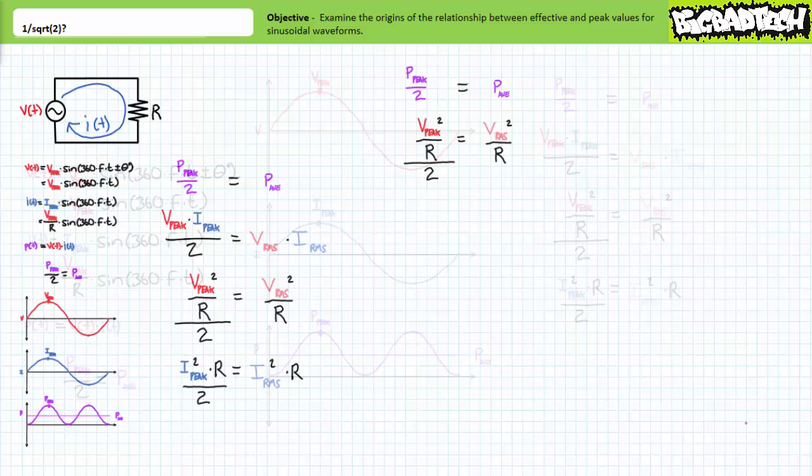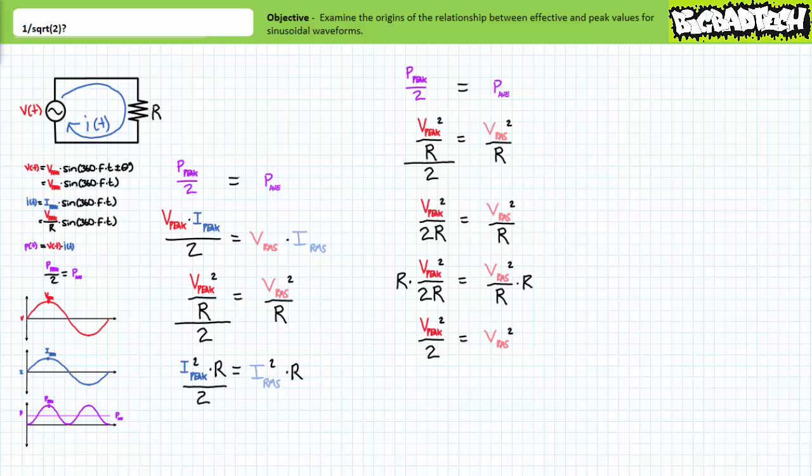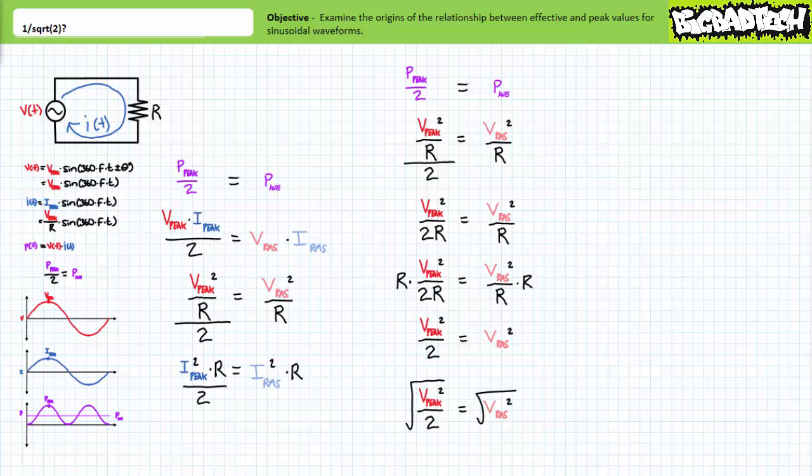Let's solve for effective voltage first. Given average power equals voltage peak squared divided by resistance divided by two, one can also say it equals effective voltage squared divided by resistance. Simplifying the expression on the left hand side, multiplying both sides by R removes the resistance from consideration. We can now square root both sides. Square rooting both sides yields an effective voltage value equals the voltage peak divided by square root two. Note the square root of one is one.